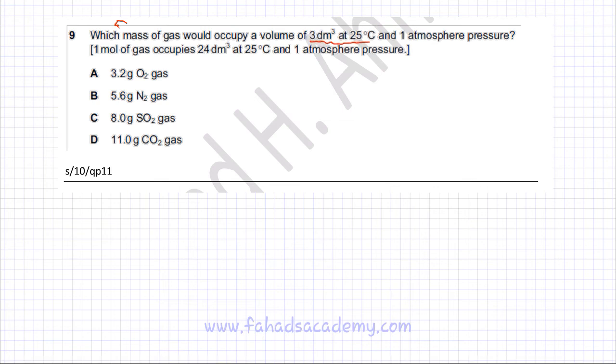Remember that at room temperature the molar volume is 24 dm³. So we need to know which gas would occupy 3 dm³, and the information given is that one mole of gas occupies 24 dm³ at 25 degrees centigrade and one atmosphere pressure. The first thing we need to do is find the moles of each of the gases.